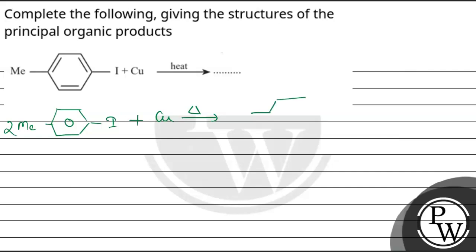And we will get the biphenyl where both methyl groups are in the para position. This is the final product. Hope you understood it well. Best of luck, thank you.